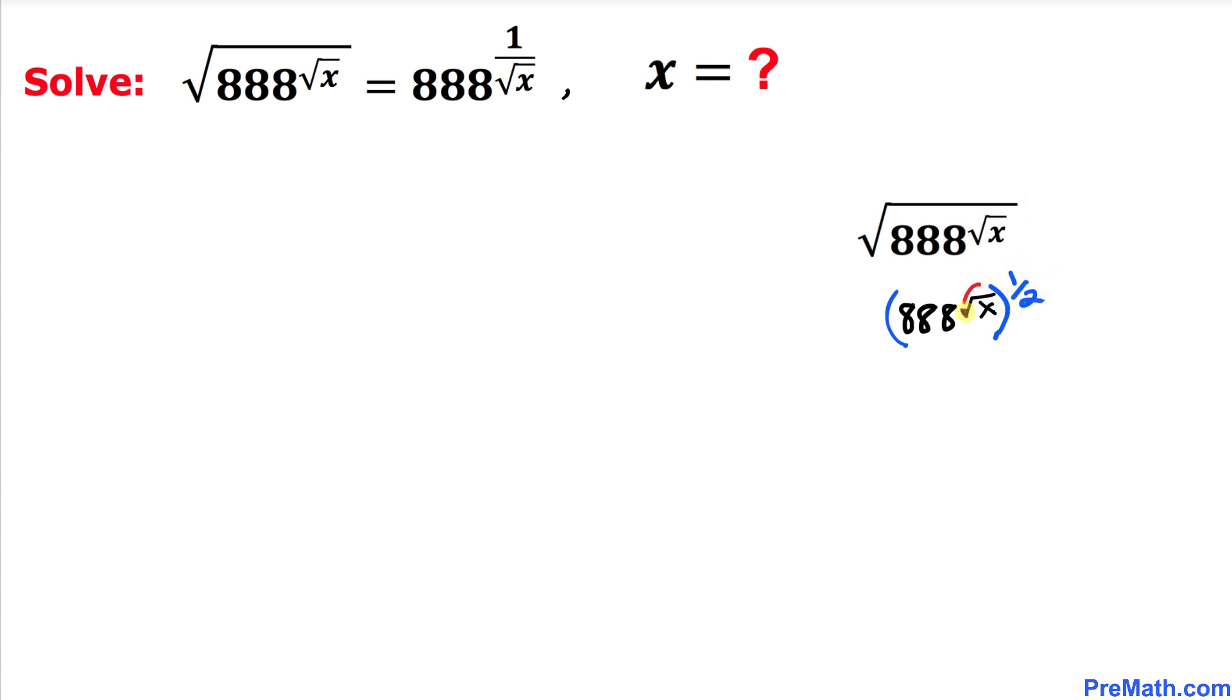Now we can see we have two nested exponents, so we are going to use the power rule of exponents. I have multiplied these two exponents, and in this final step, square root of x times 1 over 2 can be written as square root of x divided by 2.